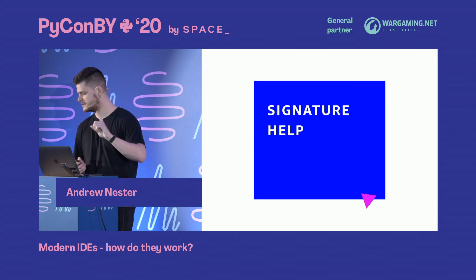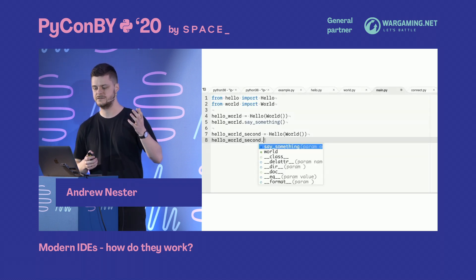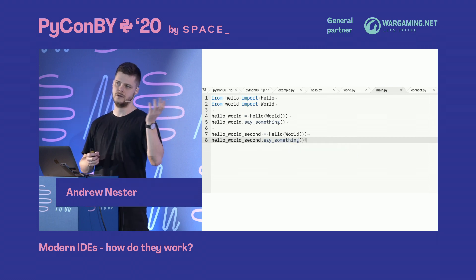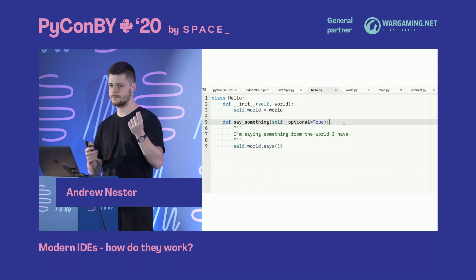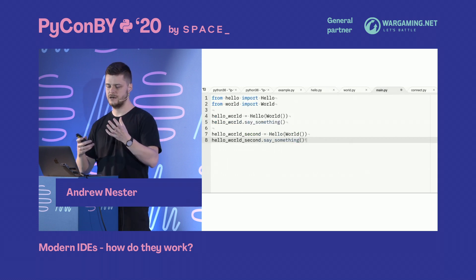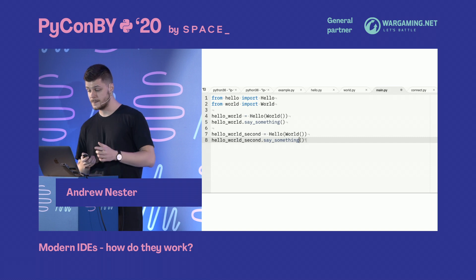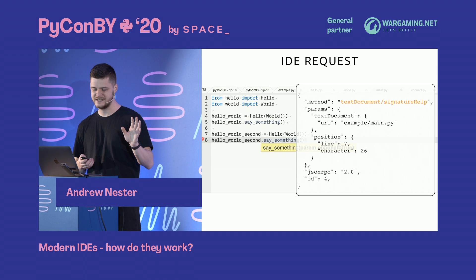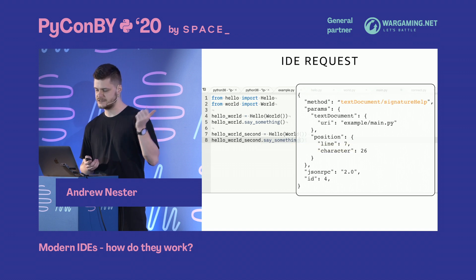Let's look at signature help — something I personally like a lot. When you trigger code completion and want to know which parameters you need to pass, you don't want to go look up the class manually. The IDE can show you which parameters are required. This is called signature help. Again, same set of parameters — barely any work for the IDE, just a different method name: 'signature help.'